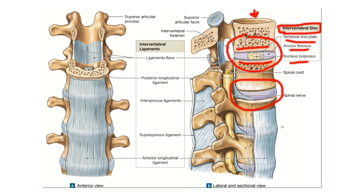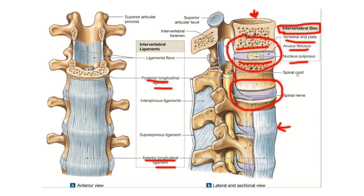The main ligaments here are the anterior longitudinal ligament and the posterior longitudinal ligament, which is present posteriorly. Other ligaments are also present and are mainly involved in the joints between the transverse processes of the vertebrae. The main movement that occurs at these joints is only a small degree of rotation — they are not very mobile joints.